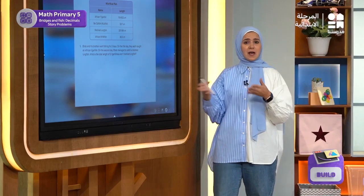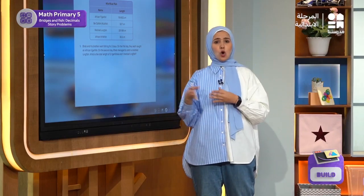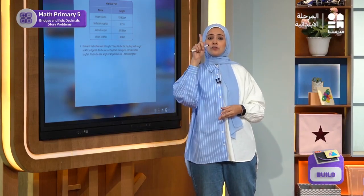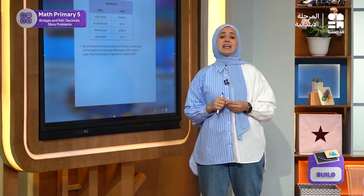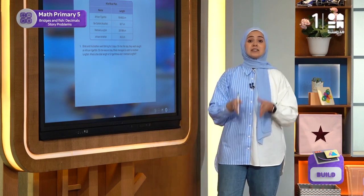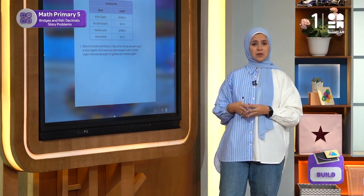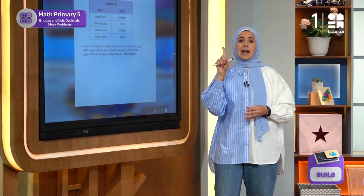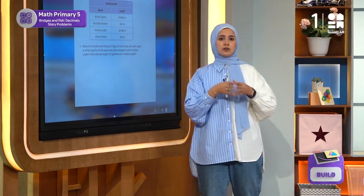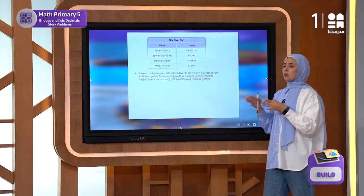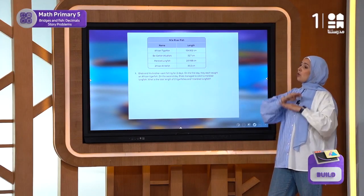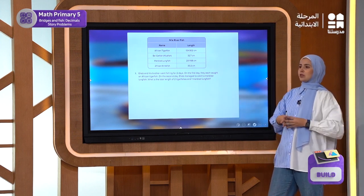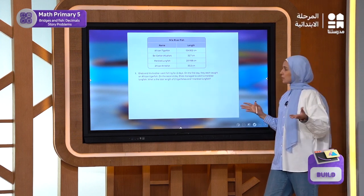What do I have? Ihab and his brother went on a fishing trip for two days. On the first day, each of them caught an African tiger fish. And on the next day, only Ihab caught a marble long fish. We need to know the average length of all the fish they caught together.